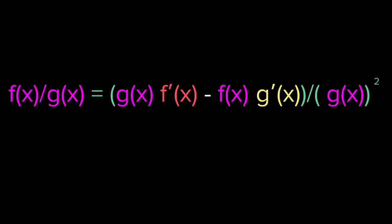So if we have f of x over g of x, the rule says we take g of x times f prime of x, minus f of x times g prime of x, over g of x squared.